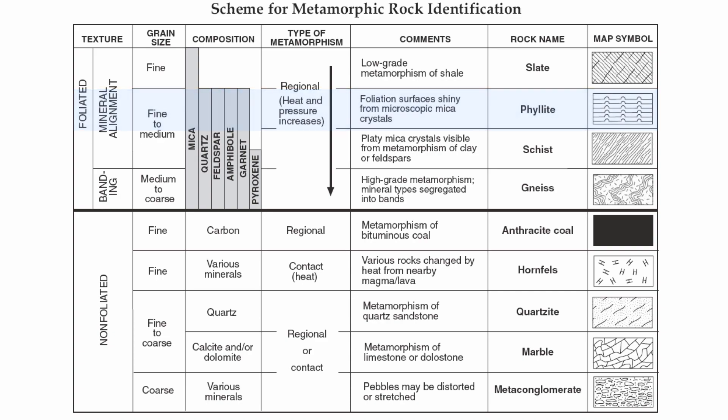You increase your heat and pressure even more, you get a rock called schist. Now you're really starting to get some very visible crystals — you're starting to get into the medium-range crystals. You have all the same minerals that phyllite had, and now you have to include pyroxene into that. You're still in the category of foliation of mineral alignment, but you're starting to get some bigger crystals.